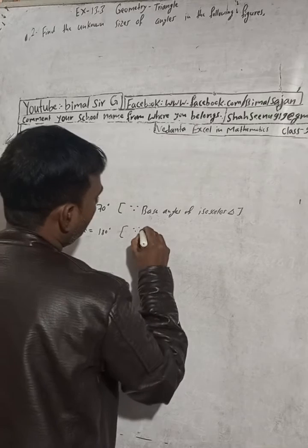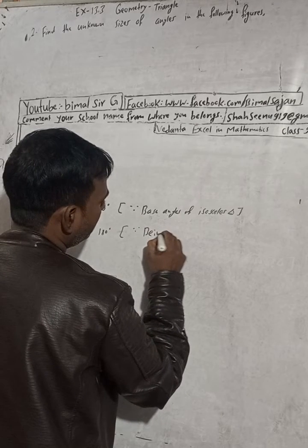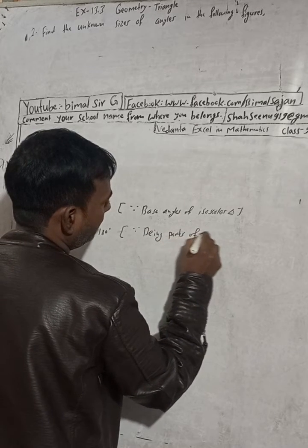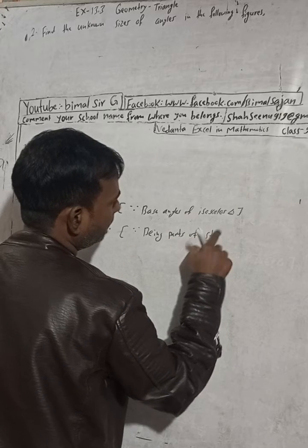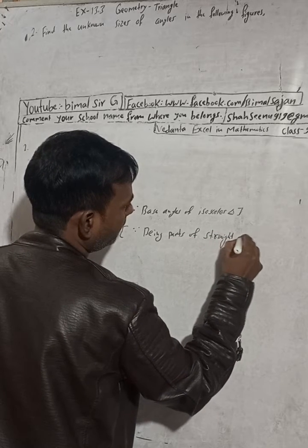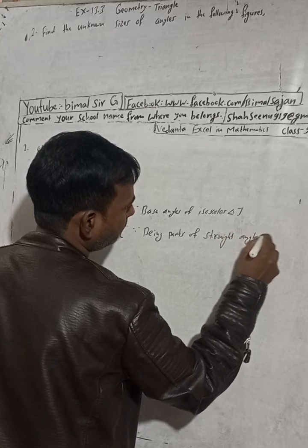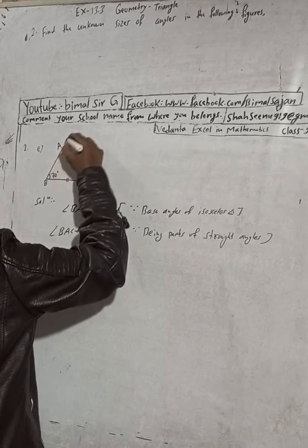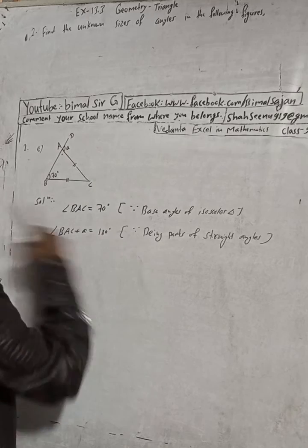This is the straight angle. So this and this is the part of the straight angle, or you can write linear pair. Both reasons are correct.